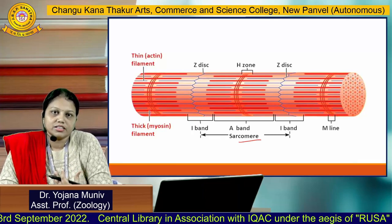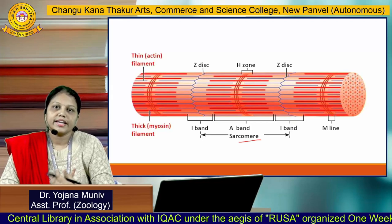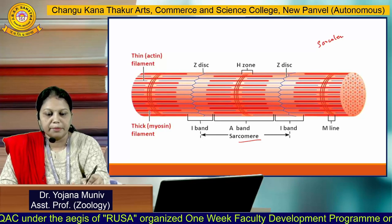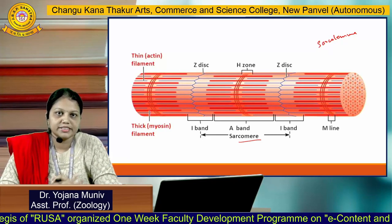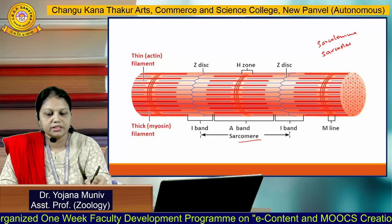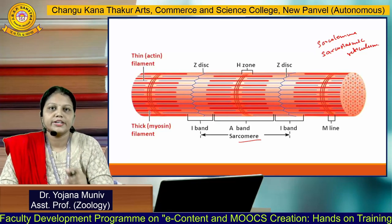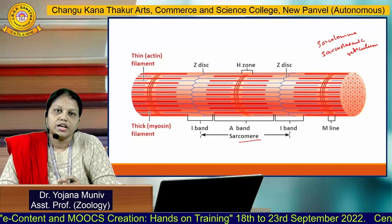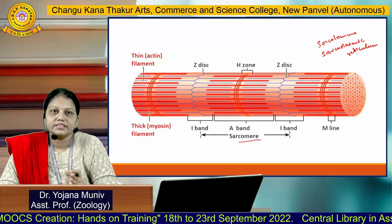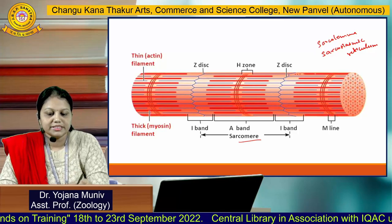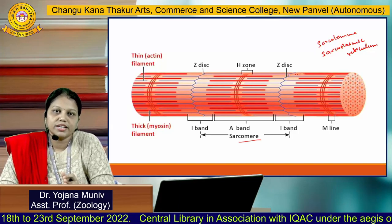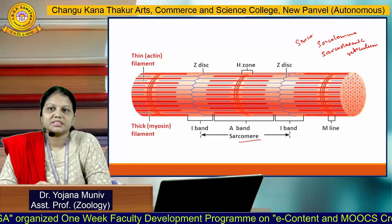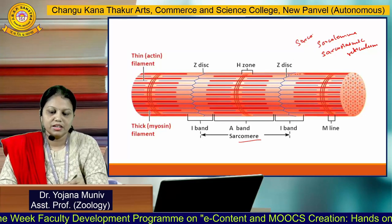In muscle cells, the organelles have different names compared to regular cells. The cytoplasm is called the sarcolemma in muscle fibers. The endoplasmic reticulum in a muscle cell is called the sarcoplasmic reticulum. The sarcoplasmic reticulum acts as the storage house of calcium, which is needed for muscle contraction. Skeletal muscle fibers are multinucleated — many nuclei are present, and they are located at the periphery towards the plasma membrane of the muscle cell.